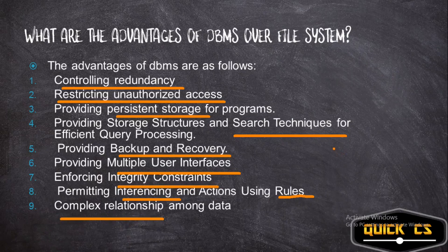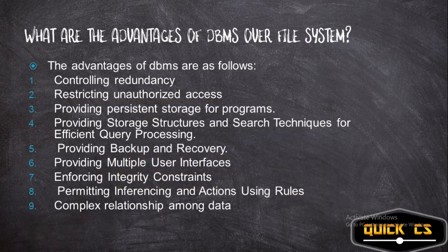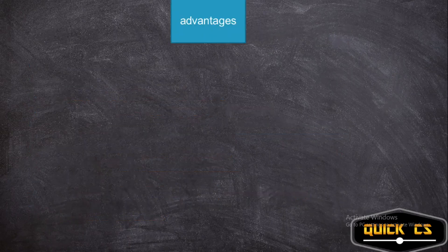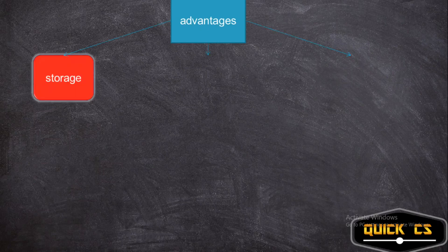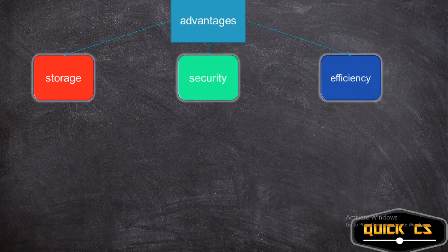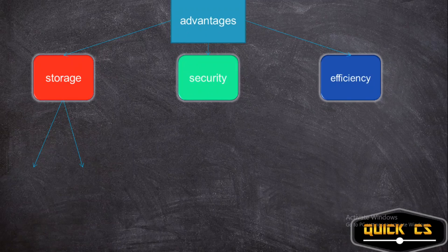That's a huge list — how are we going to remember this? We'll divide it into three different categories of advantages: storage advantage, security advantage, and efficiency advantage. In terms of storage advantage you have two advantages, security advantage you have three advantages, and efficiency advantage you have four advantages. Remember it like this: storage, security, efficiency — two, three, four.